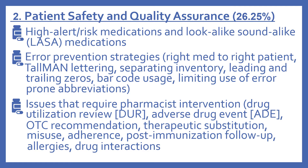Next, the patient safety and quality assurance component is about 26.25% of the test. This includes high alert and high-risk medications and look-alike, sound-alike medications. Error prevention strategies — things like getting the right medication to the right patient, tall man lettering, separating inventory, leading and trailing zeros, barcode usage, limiting use of error-prone abbreviations, and issues that require pharmacist intervention. Drug utilization review or DUR, adverse drug events, OTC recommendation, therapeutic substitution, misuse, adherence, post-immunization follow-up, allergies, and drug interactions — all things the pharmacy technician needs to report to the pharmacist.